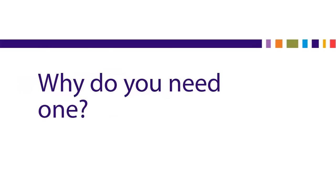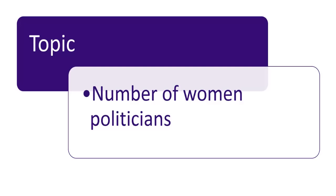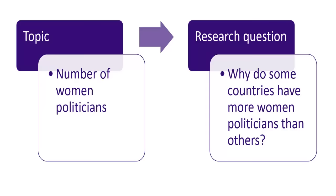Now that you know what a research question is, why do you need one? Most students find a topic, then start working on their research paper. Let's assume your topic is the number of women in politics. A topic is a starting point for a research question — you ask a research question about a topic. On our topic, we could ask, why do some countries have more women politicians than others? There are lots of possible questions you could ask about any topic. Picking a question helps you focus and gives you an angle to approach your topic, which will save you time and make your papers better.